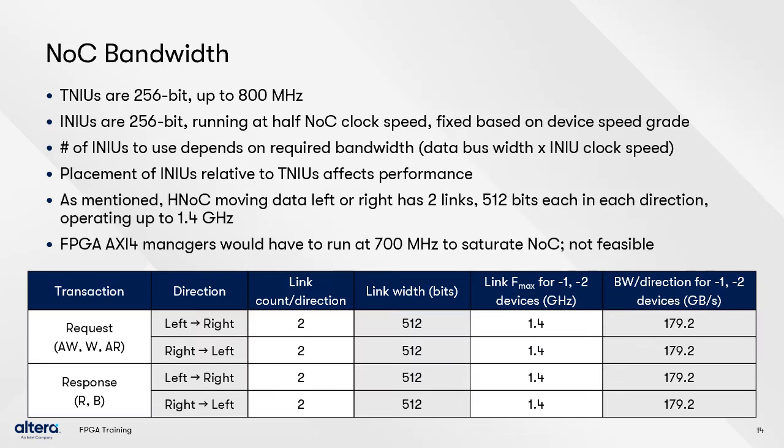The overall bandwidth of a design that uses the NOC depends on the connections to and from the NOC along with the clock speeds of the NOC itself and the interfaces connected to it. The bandwidth of the initiator and target sides of the NOC, along with the horizontal bandwidth of the NOC itself, must be taken into account. The INIU and TNIU interfaces are 256 bits wide by default. TNIUs can run at up to 800 MHz, while INIUs run at half the NOC clock speed, which is fixed based on the targeted device speed grade. DASH-3 devices run initiators at 500 MHz, while DASH-1 and DASH-2 devices run them at 700 MHz.